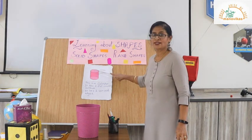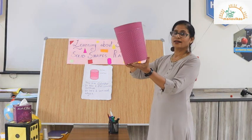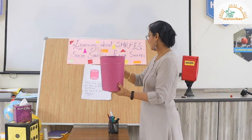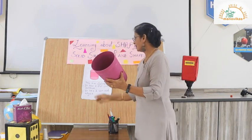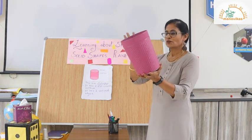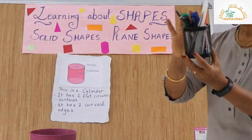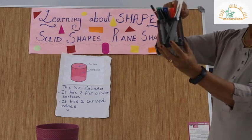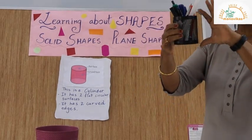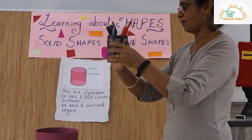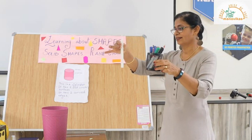Our next solid shape is a cylinder. A cylinder has two flat circular surfaces — one at the top and one at the bottom. It has two curved edges and one curved surface. This ceiling vase is a cylinder in shape. A pencil container is also cylindrical in shape because it has two flat circular surfaces, one curved surface, and two curved edges. A candle and a pencil holder are other examples of cylindrical shapes.